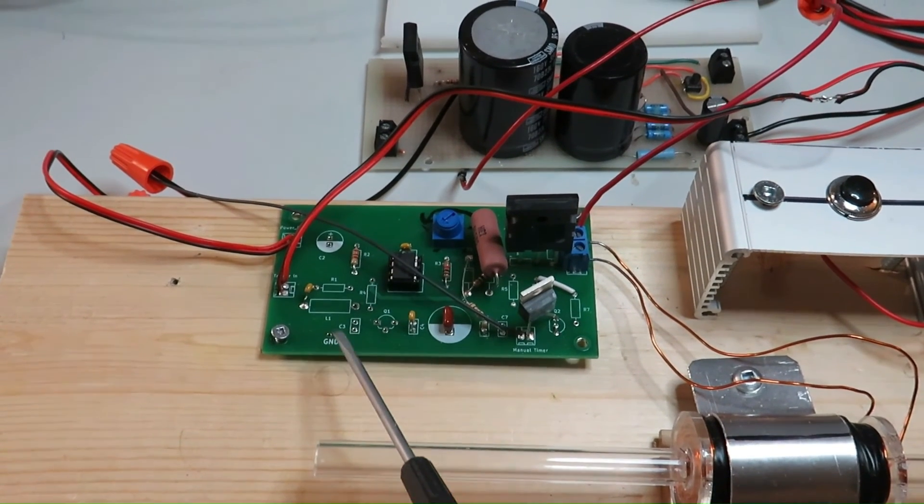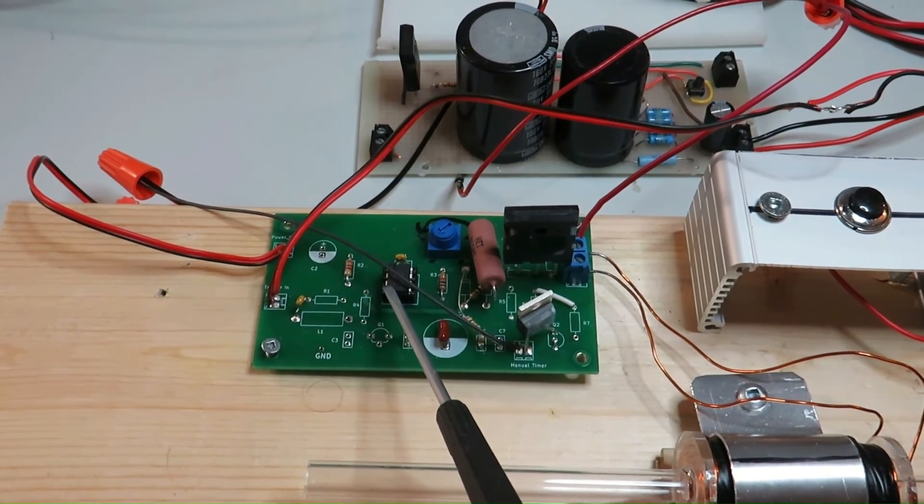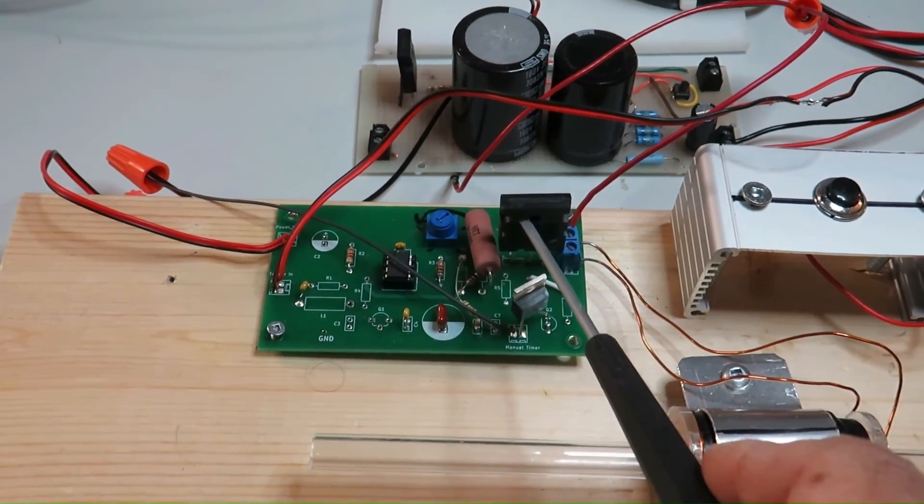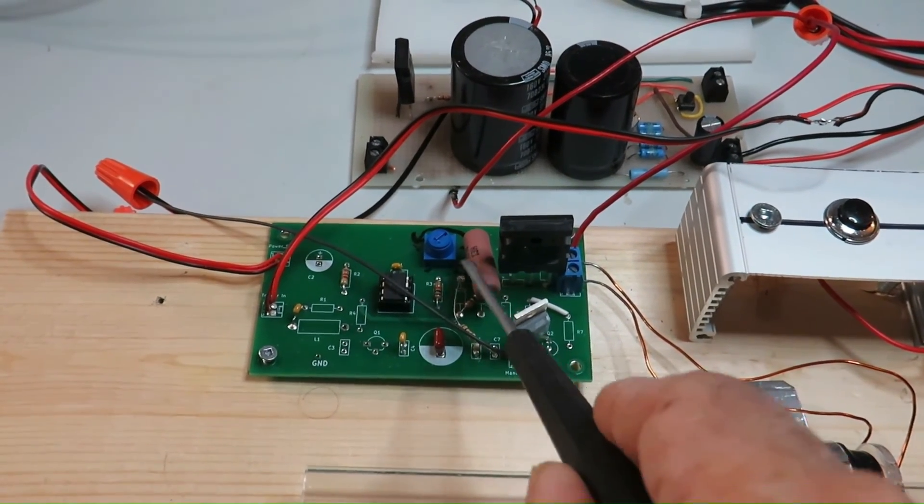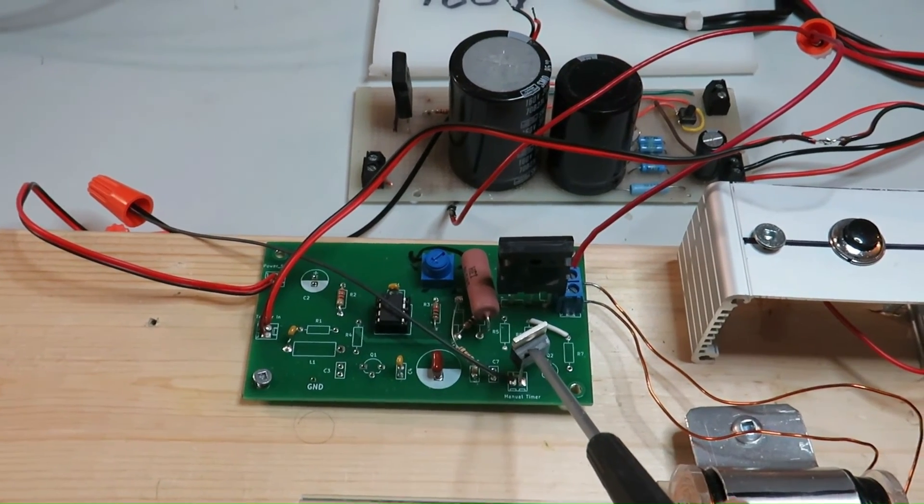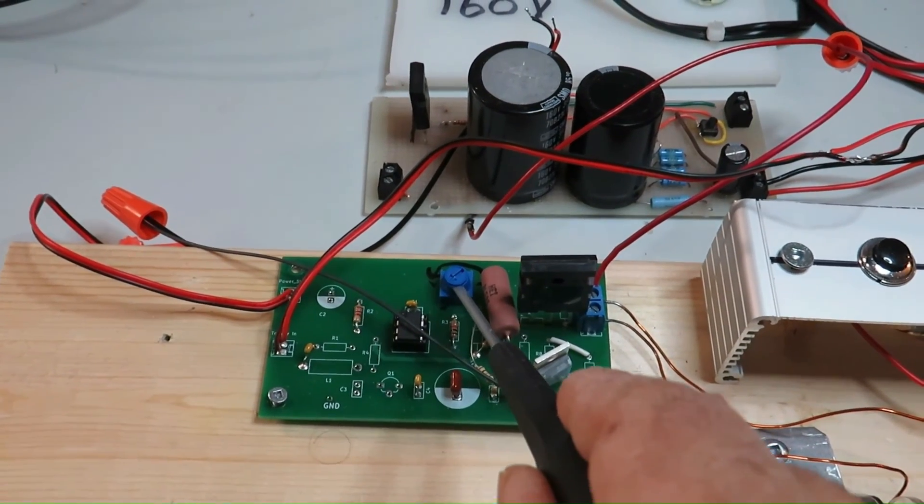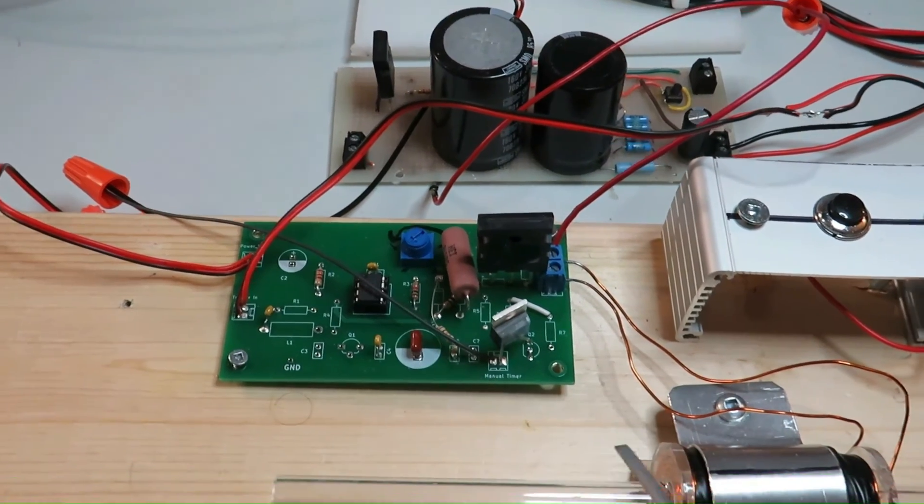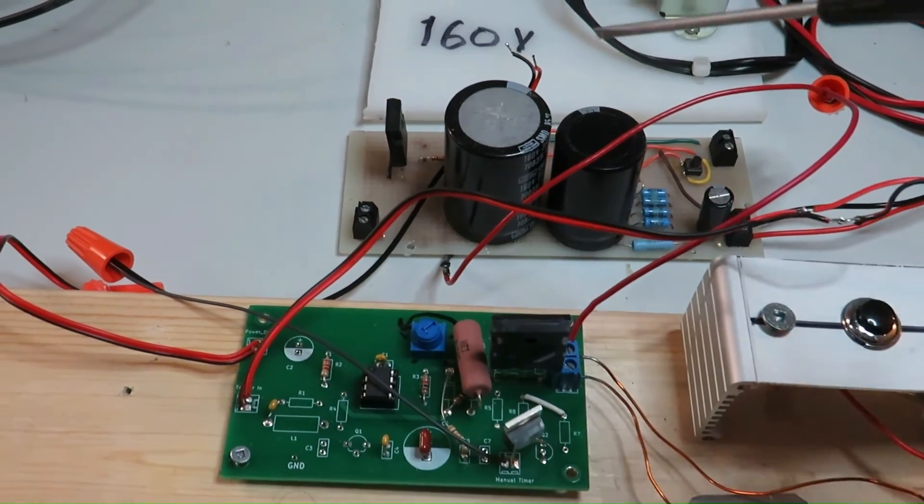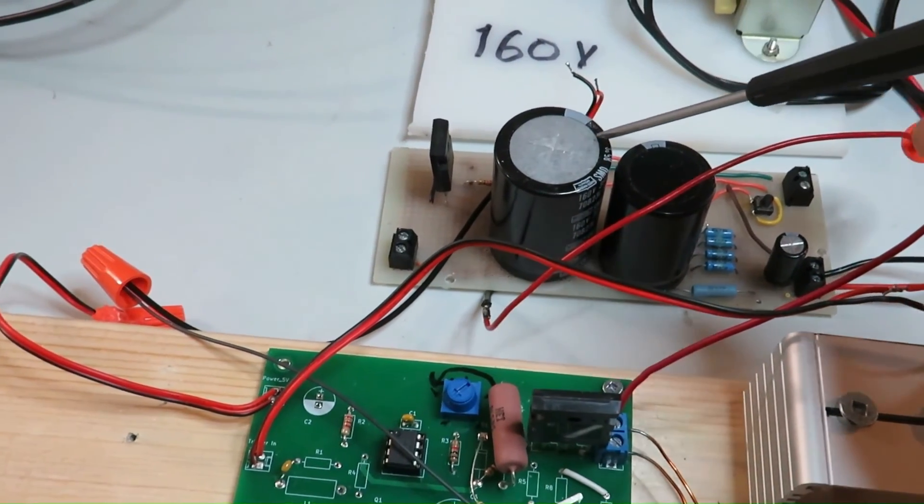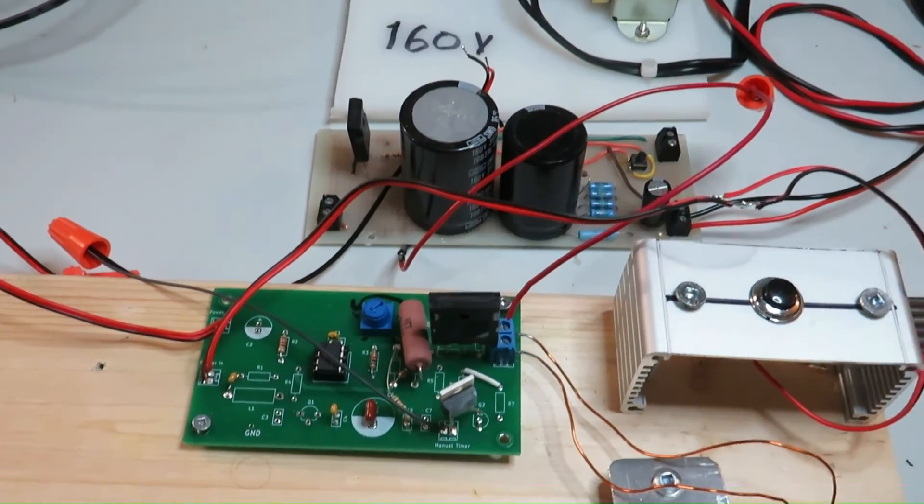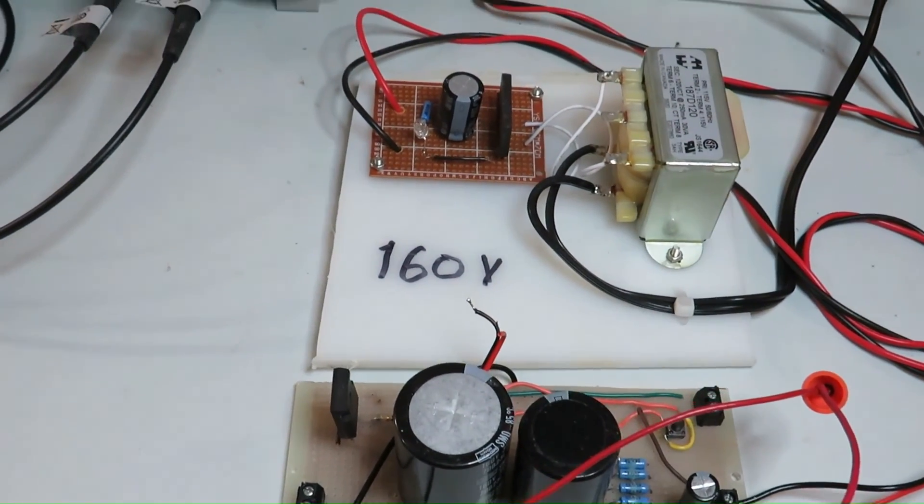This is the switching circuit for the coil. The 555 timer. This is the MOSFET. And this is the resistor with the diode. And this is the potentiometer to change the pulse width. And this is the coil. And here is the push button switch for trigger. And this is the capacitor combination, around 4000 microfarad. And this is the 160 volt power supply.